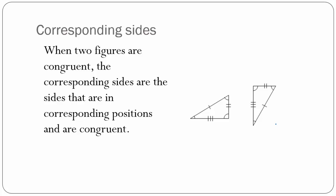Corresponding sides: when two figures are congruent, the corresponding sides are the sides that are in corresponding positions and are congruent. In this image, the side with one tick mark is congruent to the other side with one tick mark. The side with two tick marks is congruent to the side with two tick marks, and the side with three tick marks is congruent to the side with three tick marks.